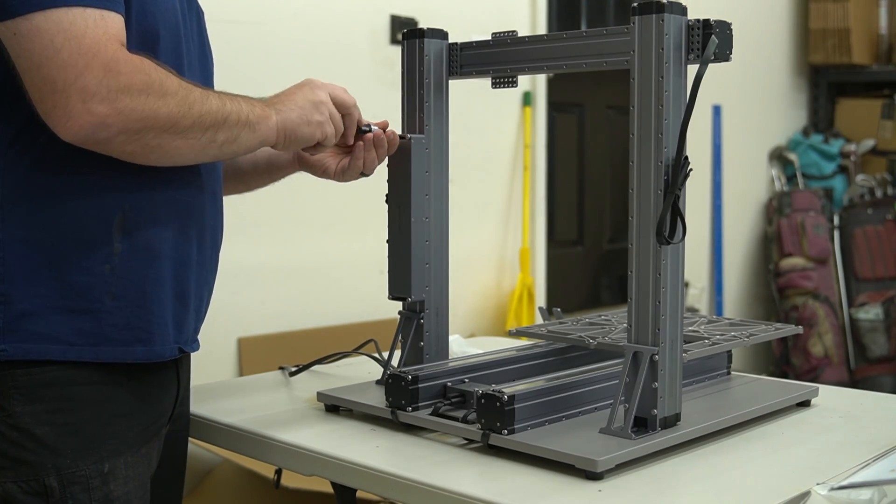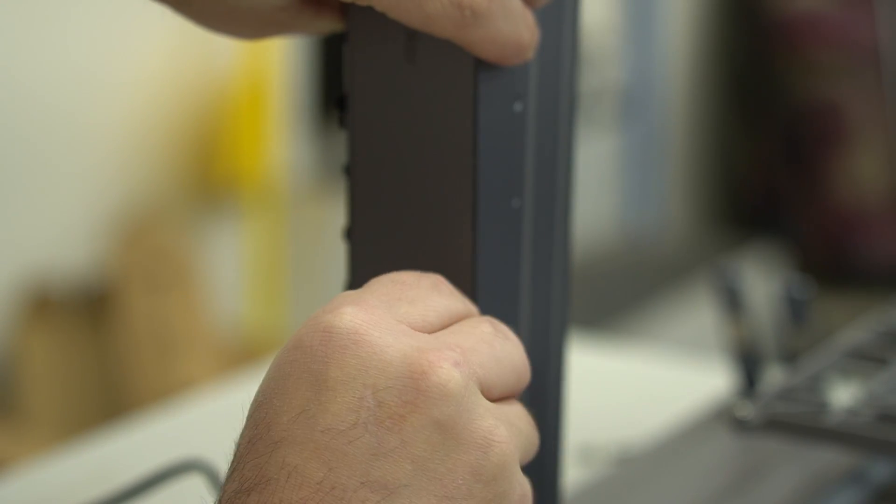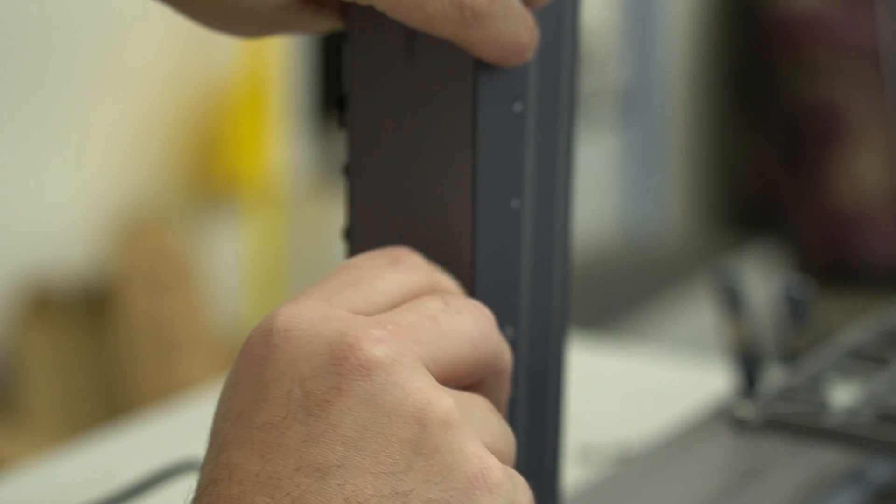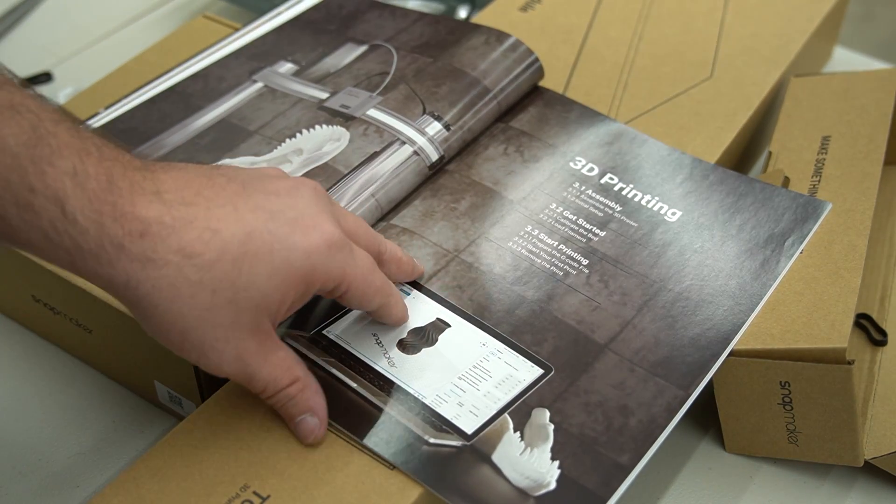Number two is the ease of assembly. I've assembled well over 10 CNC machines now, and this has been my favorite. Between the great instruction booklet and the small number of parts you need to assemble it, it goes together really fast.